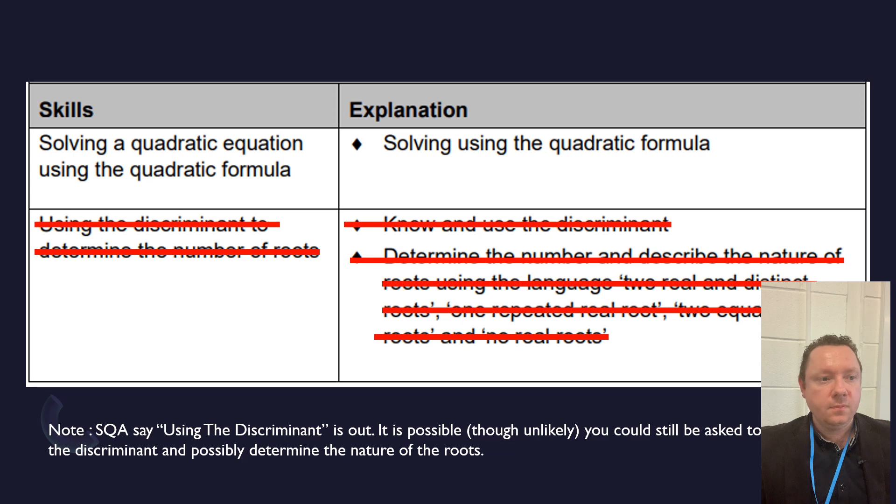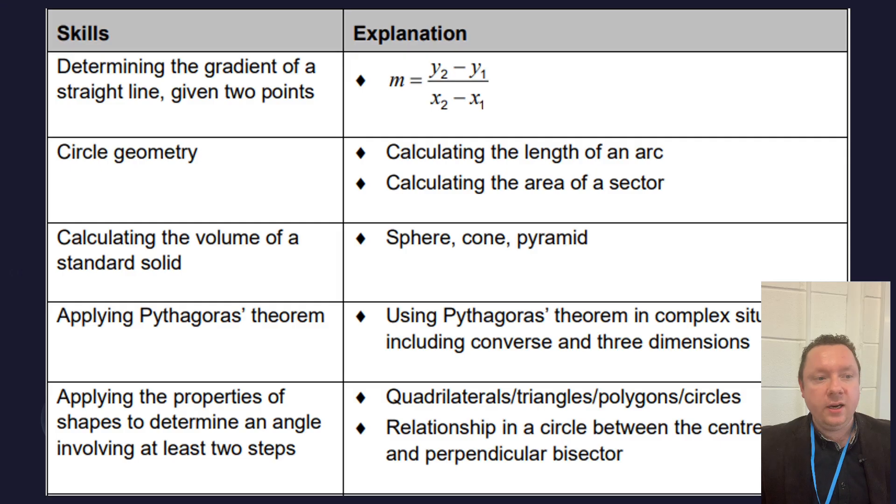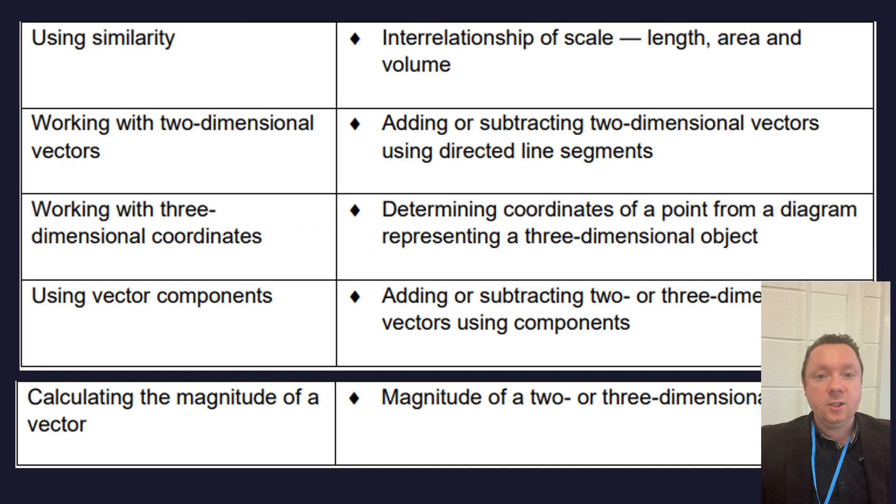Moving on, geometric skills. So determining the gradient of a straight line given two points, circle geometry. Let's look to see what's out here. Well, first thing is calculating the area of a sector is gone. All this stuff on this page is already gone. We were never doing similarity, we're never doing vectors, so we just cross that out straight away.